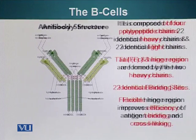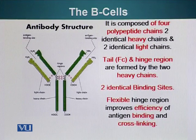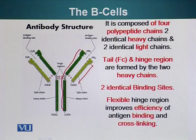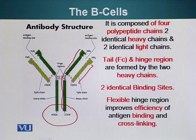B cells mature in the absence of antigen. Antibody is a Y-shaped molecule composed of four polypeptides — two identical heavy chains and two identical light chains. The tail region and the FC region are made up of the heavy chains. It is called the FC region because the term comes from fragment crystallization.